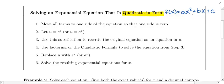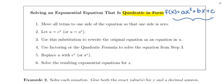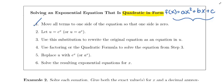If you were solving something familiar, like f(x) = ax² + bx + c, the first thing you want to do is move all terms to one side of the equation so that one side is zero. That applies as well if you're dealing with an exponential equation that is quadratic in form — move everything to one side and make sure one side is equal to zero.